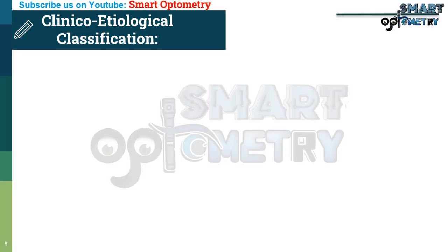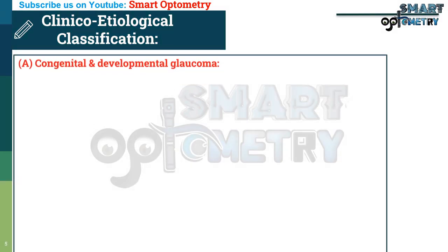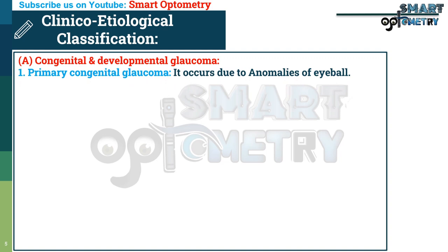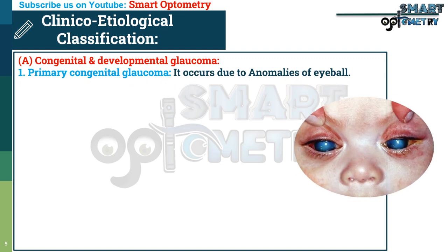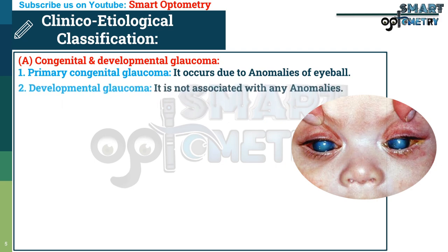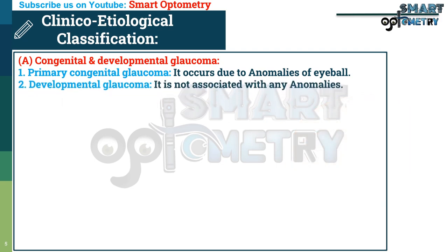Now, the clinical etiological classification in detail. A. Congenital or developmental glaucoma — divided into two types: 1. Primary congenital glaucoma, which occurs due to anomalies of the eyeball, and 2. Developmental glaucoma, which is not associated with any anomalies.